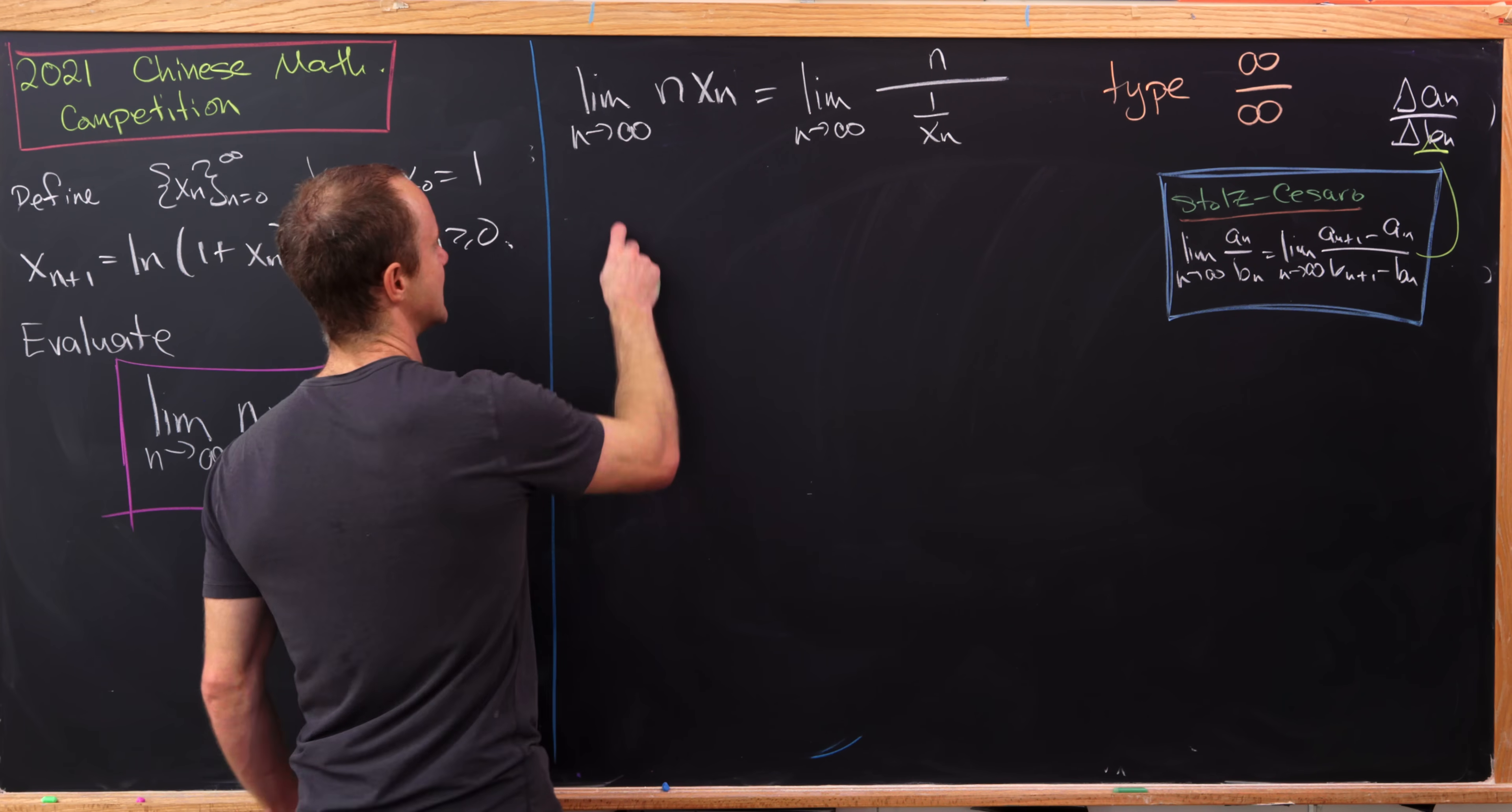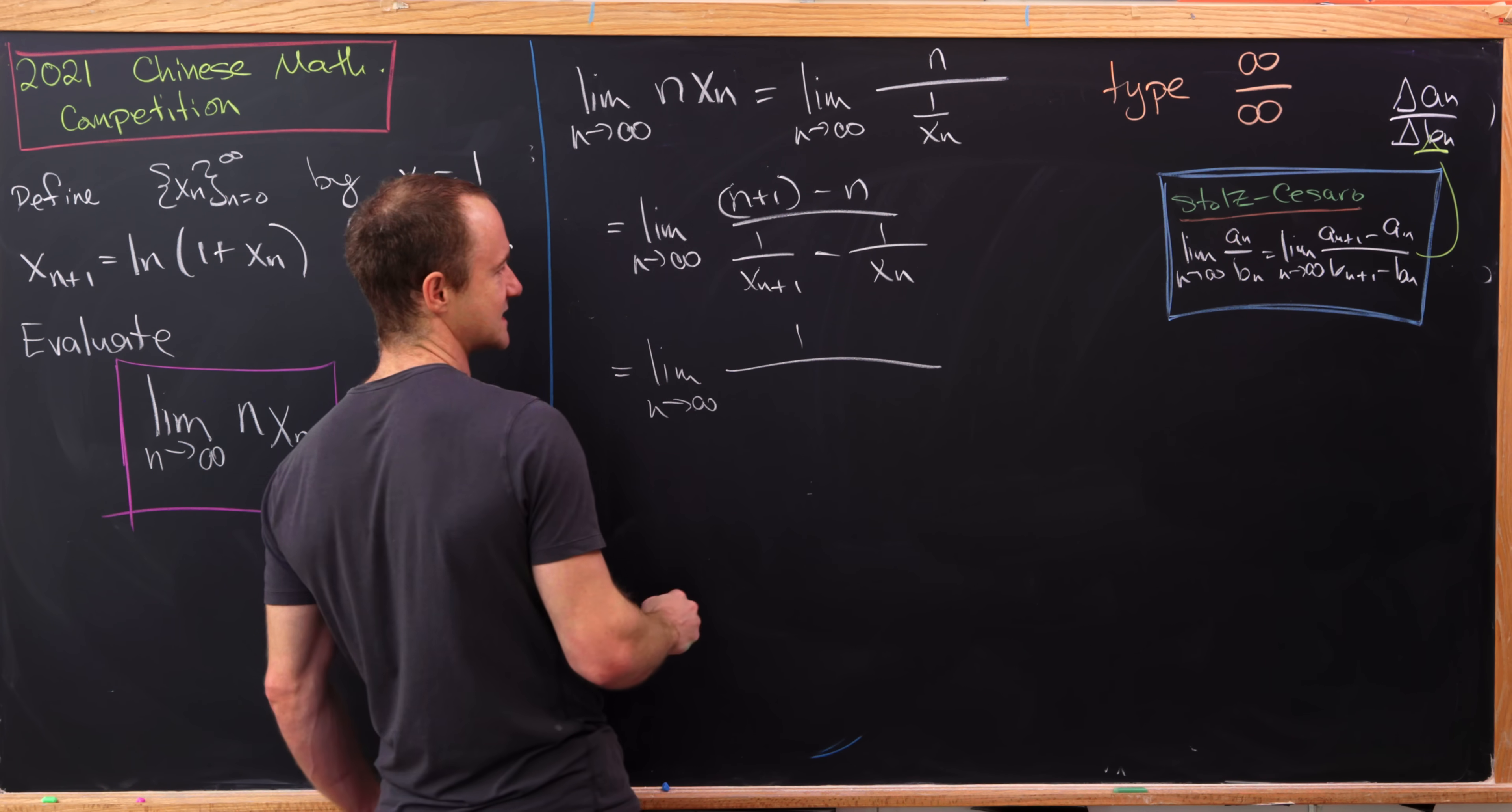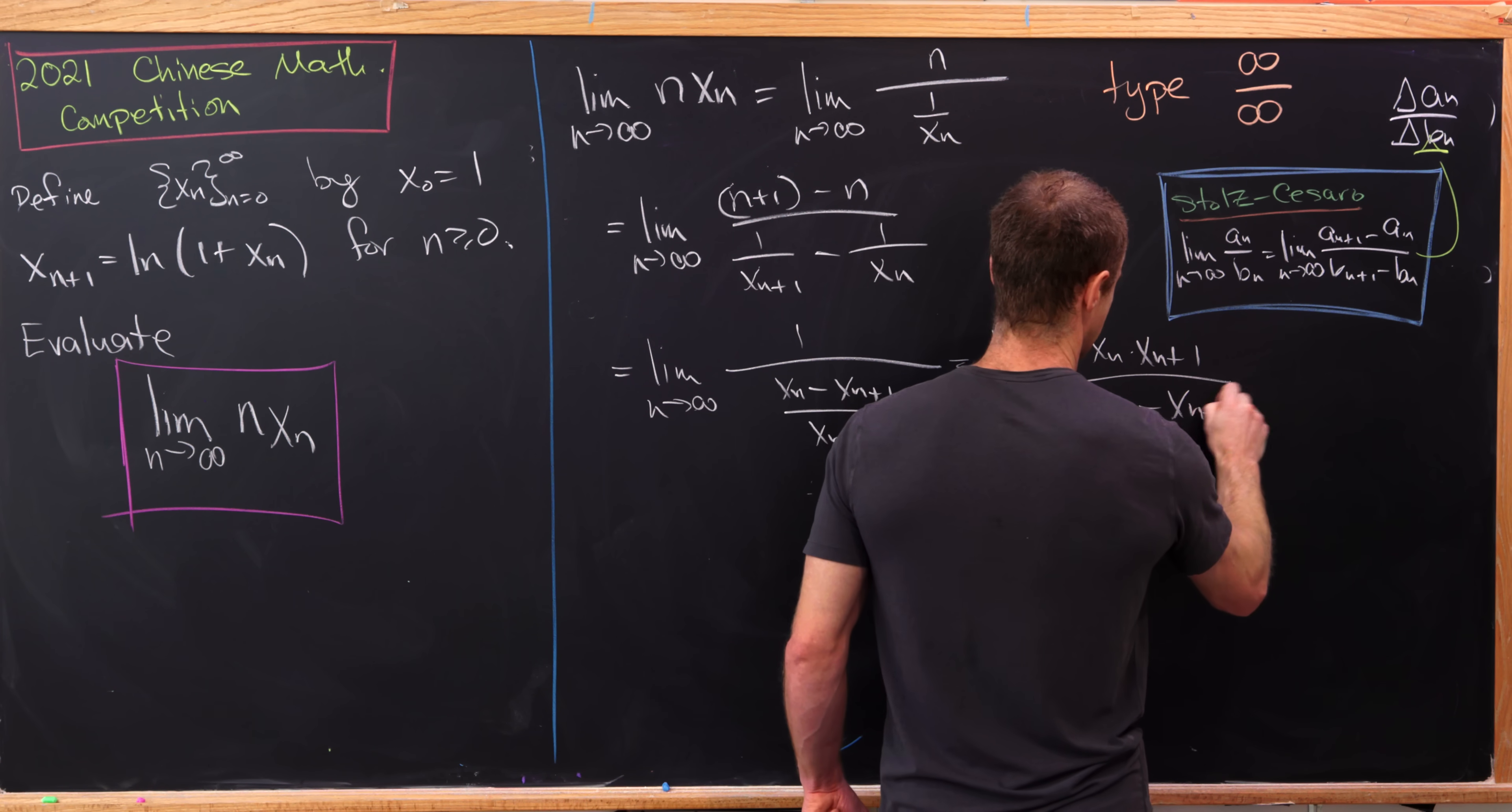So let's see how that applies here. That's going to leave us with the limit as n approaches infinity of n plus 1 minus n over 1 over x_{n+1} minus 1 over x_n. We have 1 in the numerator. Then putting stuff together in the denominator will give us x_n minus x_{n+1} over the product x_n times x_{n+1}. But now flipping that over, we'll have this limit as n goes to infinity of x_n times x_{n+1} over x_n minus x_{n+1}.